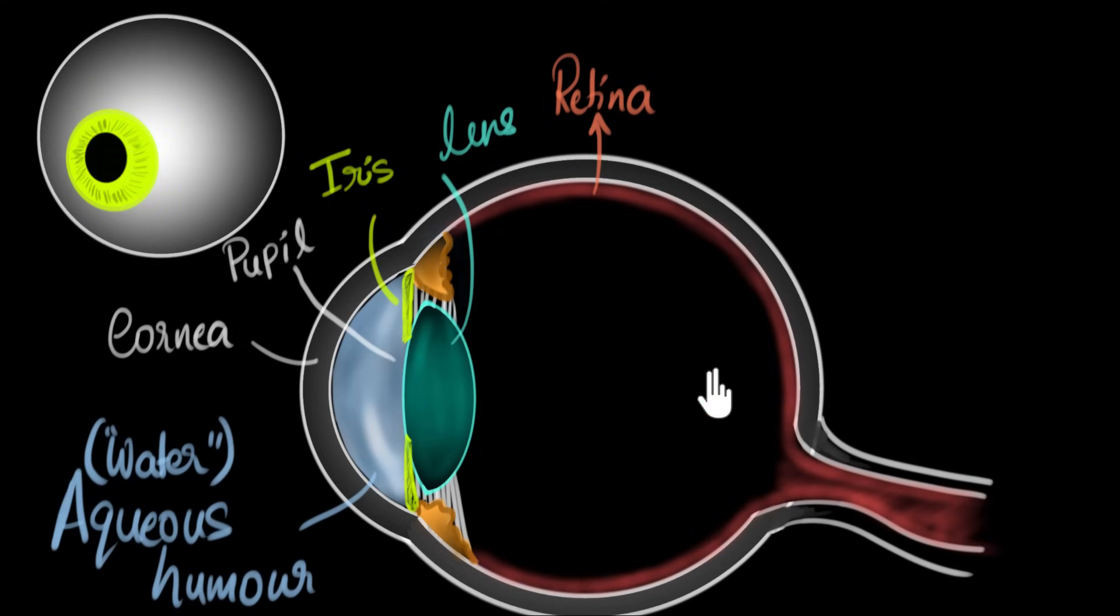And what do these cells do? Well these cells, once light falls on them, they convert light into electricity. And finally those electrical signals are carried from the retina all the way to our brain through some nerves.